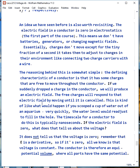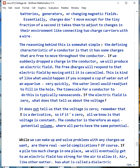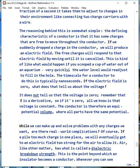Now, there's an idea we've seen before that's also worth checking out. We know the electric field in a conductor is zero in electrostatics, and that's the first half of our course, our first quarter maybe. This means we don't have batteries or generators or changing magnetic fields. The charges don't move except when they equalize. If we connect two items of a different charge and there's a little spark, then the charges move for that fraction of a second. The reason here, we know the E field inside will be zero because the characteristic of a conductor that's important is it has free charges. They can move throughout the conductor. If we suddenly drop a charge in the conductor, we would produce an electric field, and free charges will respond to that electric field by moving until it's canceled. One way to think of this is what would happen if you scoop a cup of water out of an aquarium. Very quickly, the water level readjusts to fill in the hole. The timescale for a conductor to make this readjustment is nanoseconds. So, if the electric field is zero, what does that tell us about the voltage?